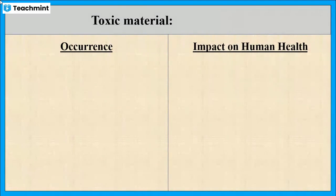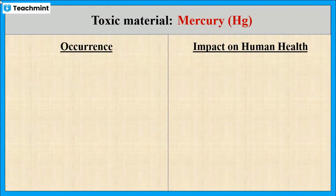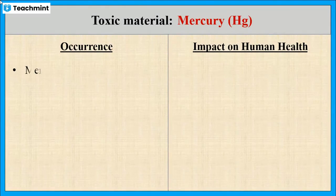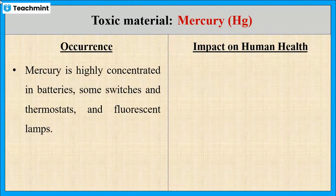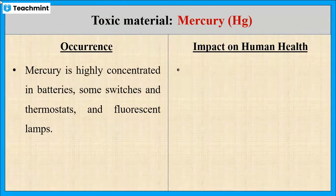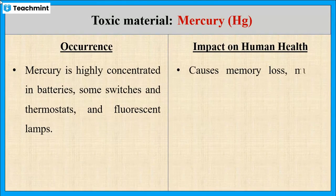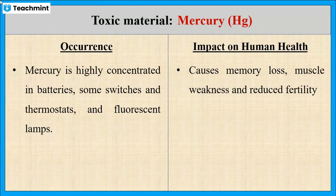The next material is mercury. It is highly concentrated in batteries, some switches, thermostats and fluorescent lamps. Exposure to mercury may cause memory loss, muscle weakness and reduced fertility.